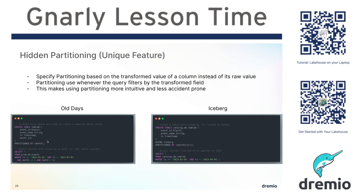What you would do is generally add another column — in this case, a column called 'month' — and then partition by that month column. As a data engineer, every time you ingested the data, you would have to take the extra step of taking the timestamp for every record and converting it into a month value like one through twelve, and then partition based on that value. So there's an extra step required, making it harder to execute as a data engineer.